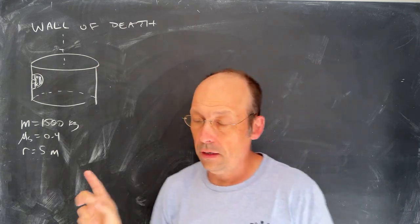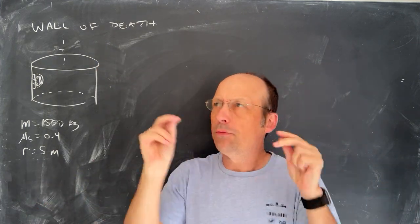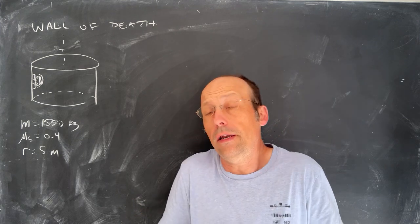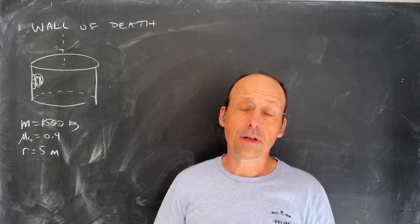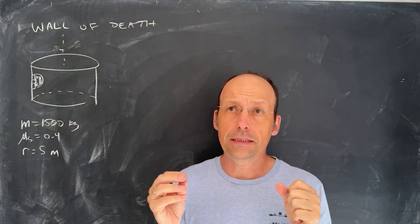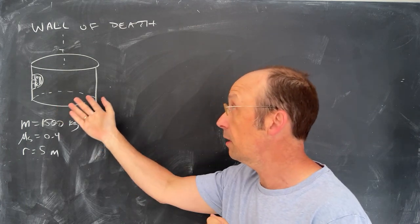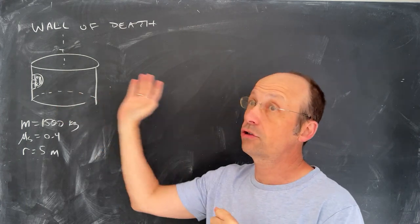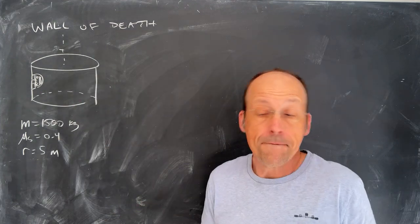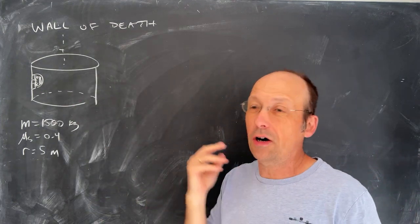The Wall of Death — there are multiple walls of deaths. It's an amusement park attraction, not a ride. It's a big cylinder, and cars drive on the inside of the cylinder. It's kind of cool. Motorcycles do it too — it's easier with a motorcycle, but they do it with cars.